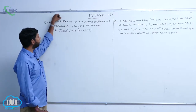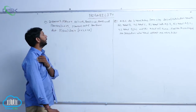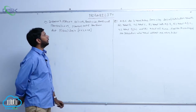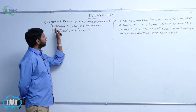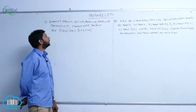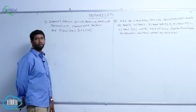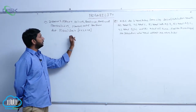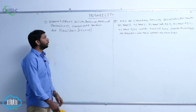P(A) = 0.3, P(B) = 0.4, P(C) = 0.8. P(A∩B) = 0.08 and P(A∩C) = 0.28. If P(A∩B∩C) = 0.09 and P(A∪B∪C) ≥ 0.75, then show that P(B∩C) lies in the closed interval [0.23, 0.48].